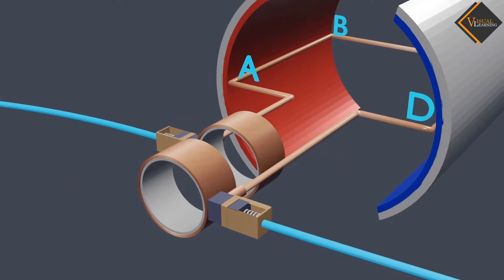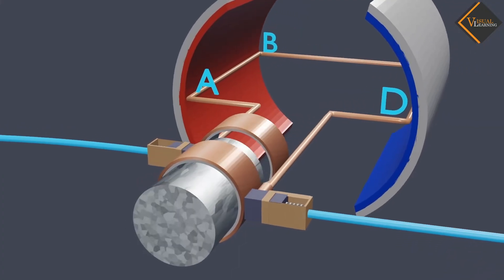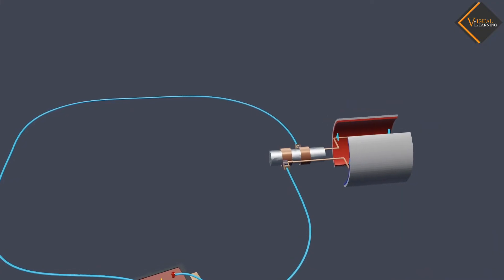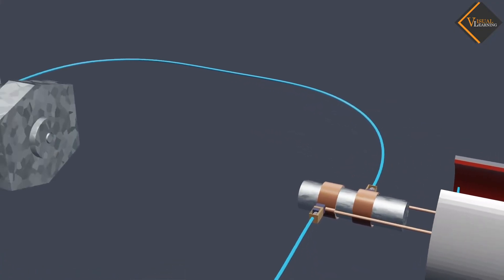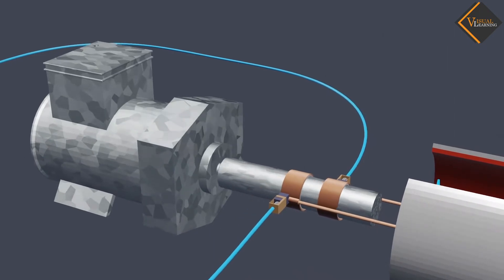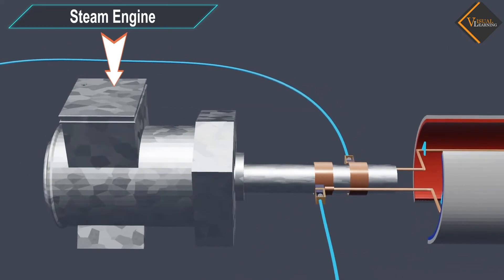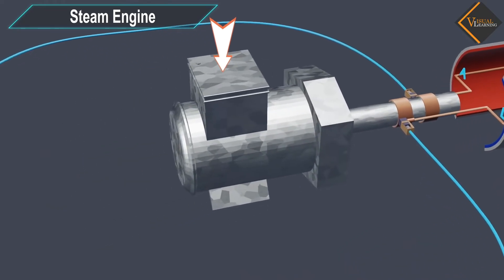The two rings R1 and R2 are internally attached to an axle. To provide mechanical energy to the rotating axle, the axle is connected to an outer energy source. This energy source can be a steam engine which produces mechanical energy with the help of high pressurized steam.